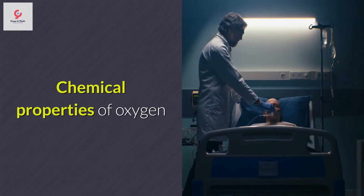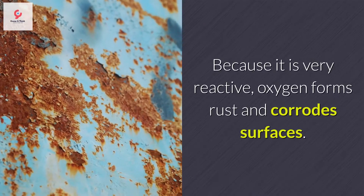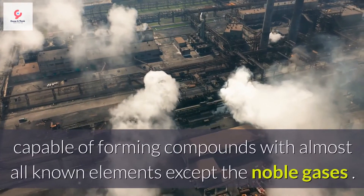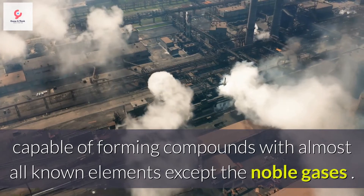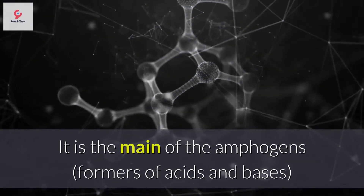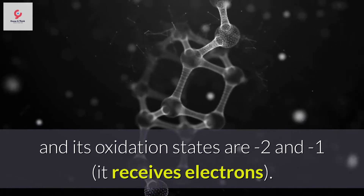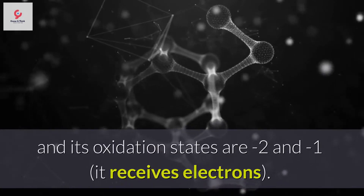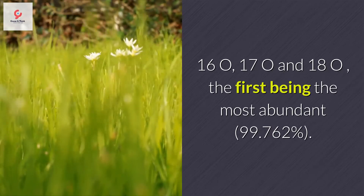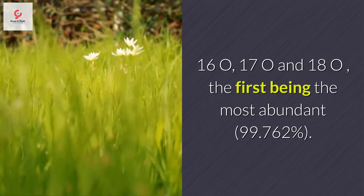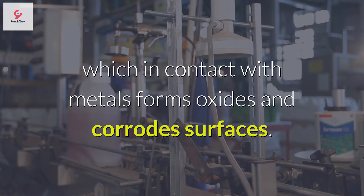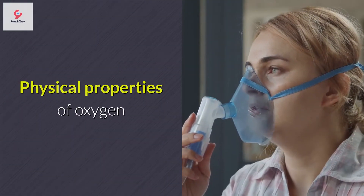Chemical properties of oxygen. Oxygen is a highly reactive chemical, capable of forming compounds with almost all known elements except the noble gases. It is a non-metallic element, very electronegative. It is the main of the amphogens — formers of acids and bases — and its oxidation states are minus 2 and minus 1, meaning it receives electrons. Oxygen has three natural and stable isotopes: 16-O, 17-O, and 18-O, the first being the most abundant. In all its presentations it is a highly reactive and flammable substance, which in contact with metals forms oxides and corrodes surfaces.